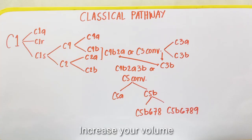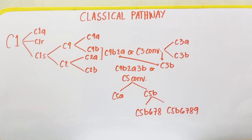These are the Classical Pathway, Alternative Pathway, and the Lectin Pathway. I am first going to explain the pathway that was first discovered in 1900, and that is the Classical Pathway. In each pathway, there is always a requirement for activation, and in the case of the Classical Pathway, the requirement for activation is the Antigen-Antibody Complex.